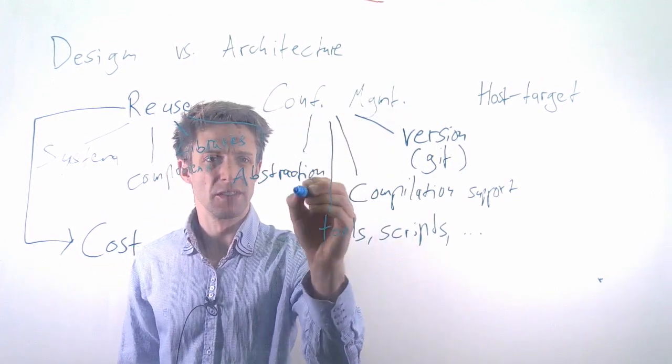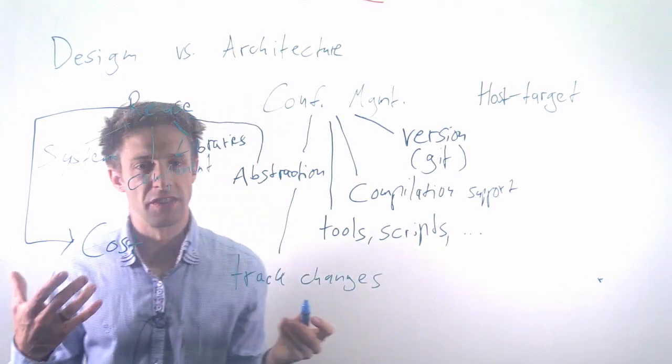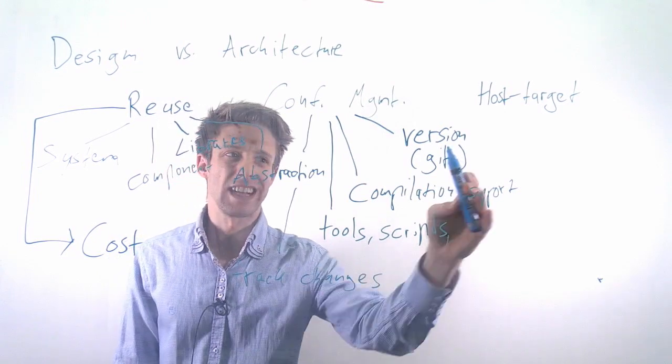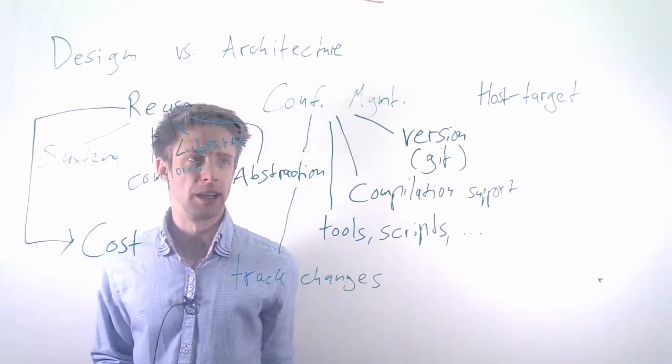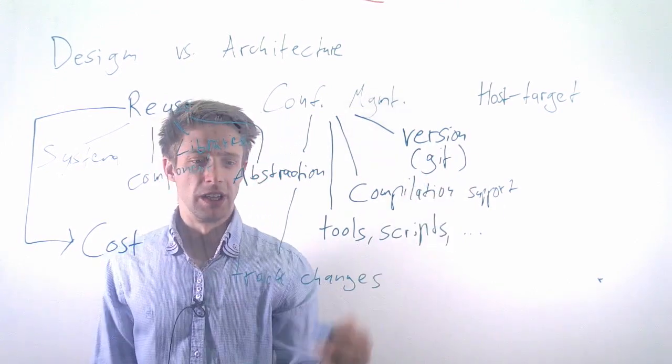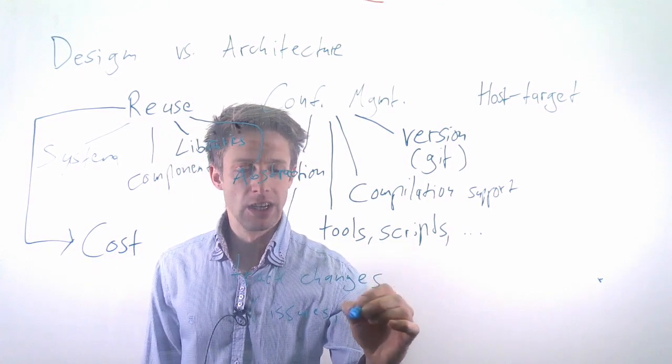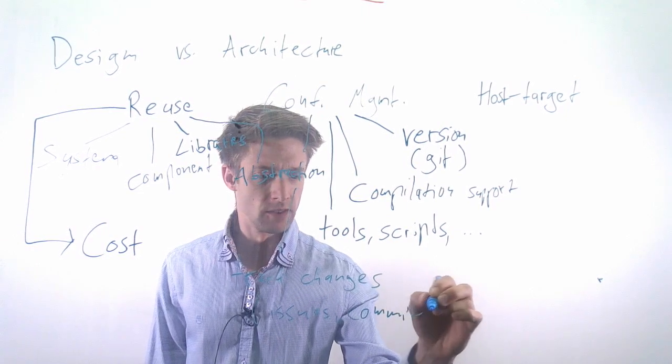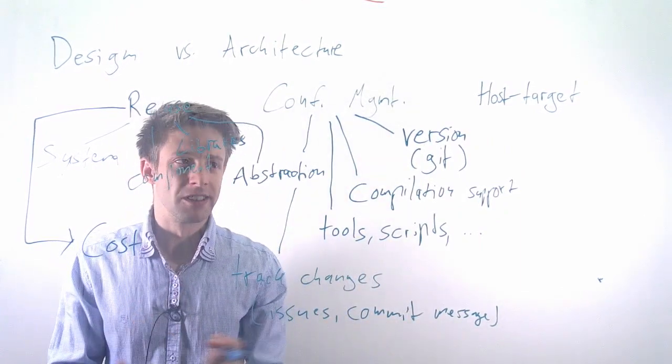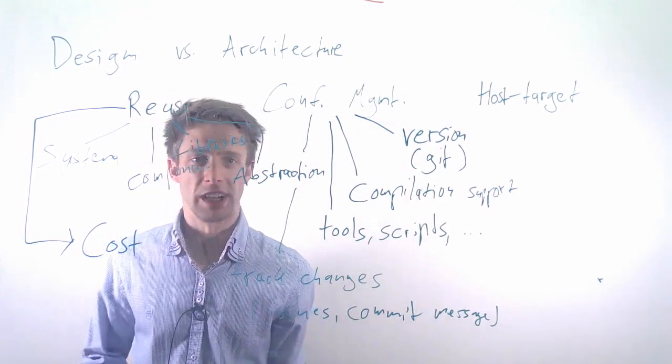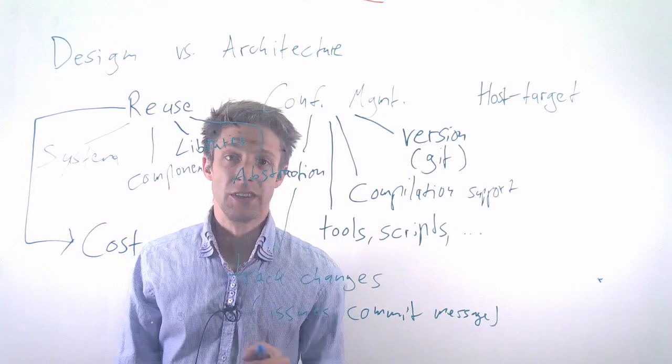Finally, what we also often consider in configuration management is the ability to track changes. For example, you discover a bug in your system. Do you have some kind of way of reporting this so it is actually connected to the right version, to the right compiler and so on? Many of the tools like Jira that are in practice allow you to link that to Git so you have a right commit. But it is also about smaller things. Issue tracking and change management is one way of addressing this, but it is also about for example using commit messages.